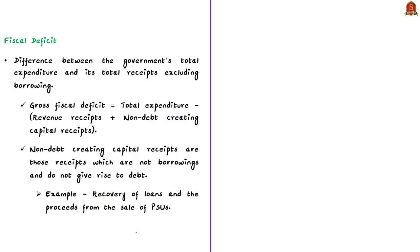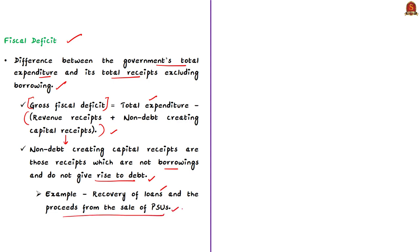Fiscal deficit is the difference between the government's total expenditure and its total receipts excluding borrowing. The gross fiscal deficit equals total expenditure minus revenue receipts and non-debt creating capital receipts. Non-debt creating capital receipts are those receipts which are not borrowings and do not give rise to debt — for example, recovery of loans and proceeds from the sale of public sector units.